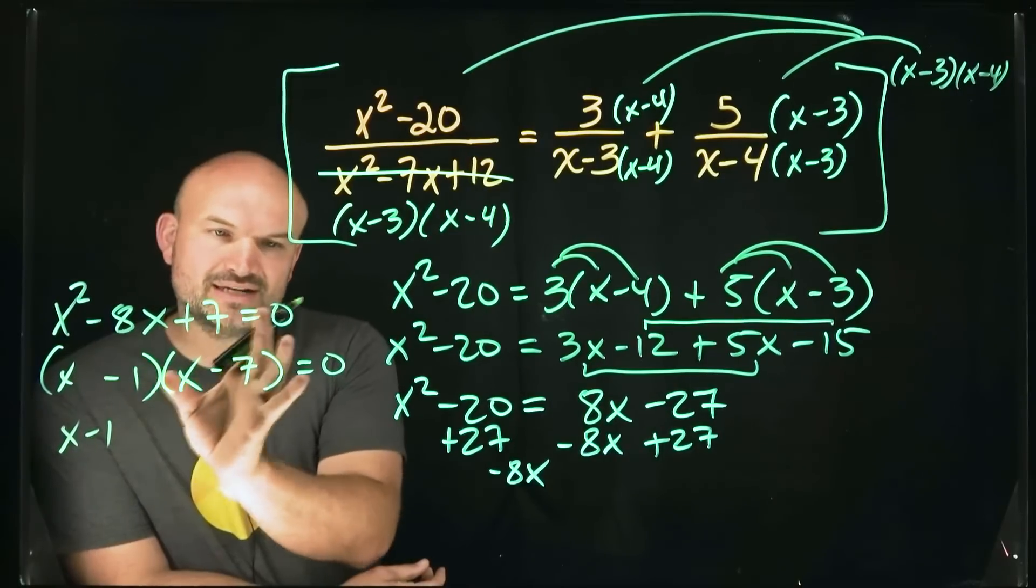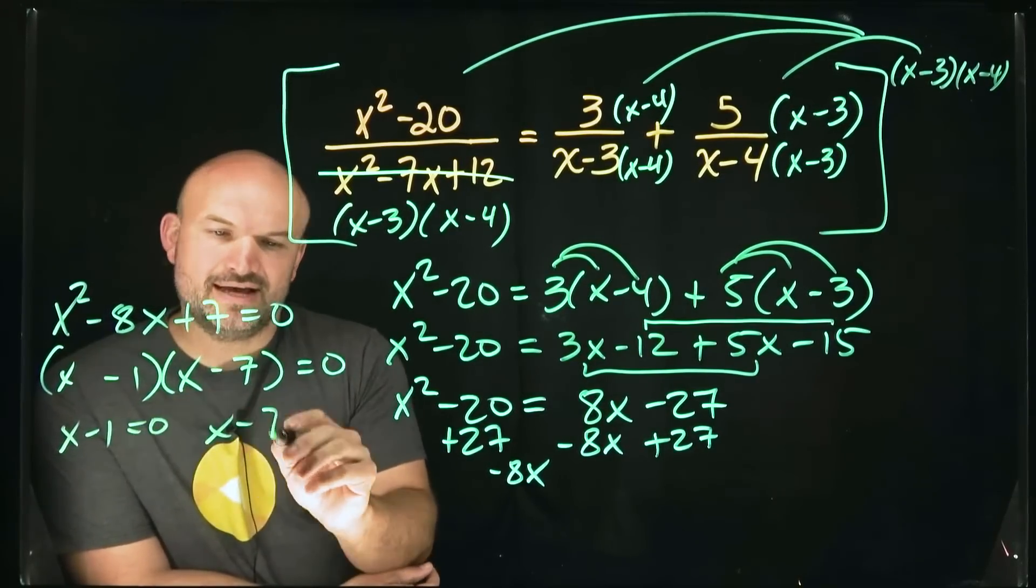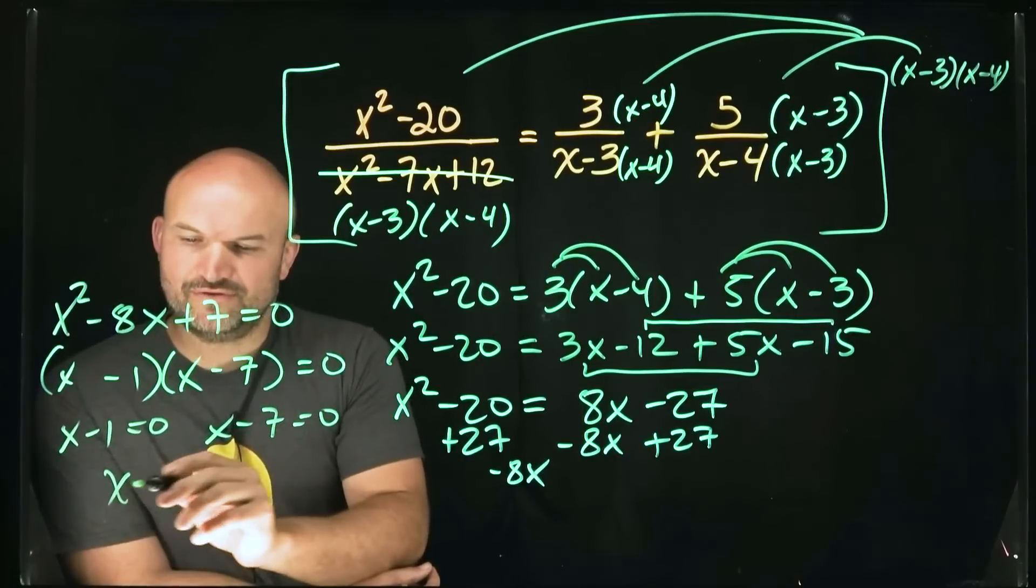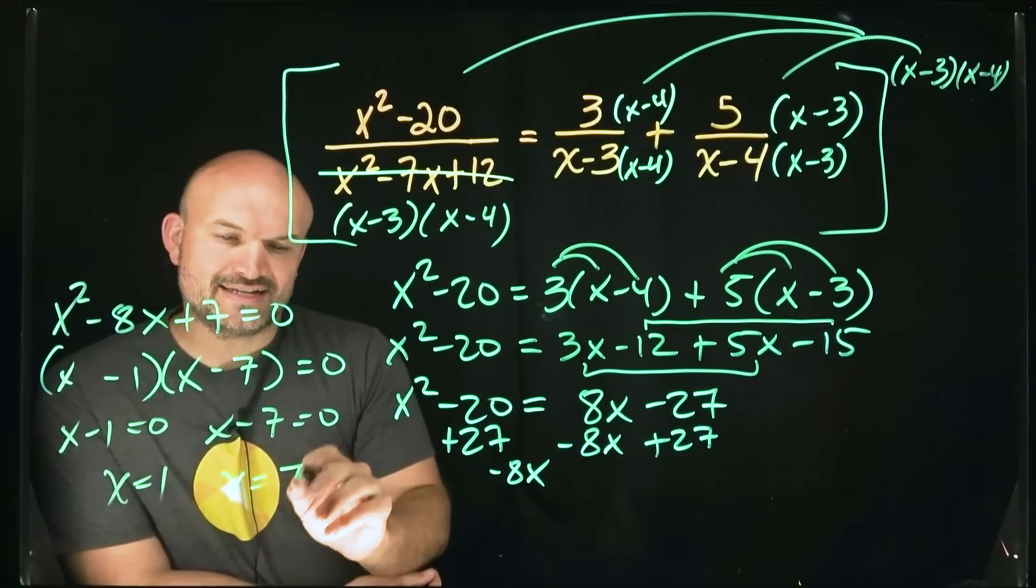So since the product of these is equal to zero, that means x minus 1 is equal to zero, x minus 7 is equal to zero. So therefore x equals 1 and x equals 7.